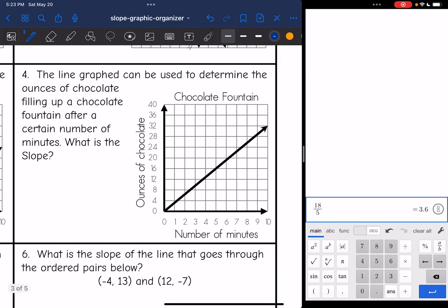The next one says the line graph can be used to determine the ounces of chocolate filling up a chocolate fountain after a certain number of minutes. What is the slope? So I'm going to look at my y-axis. I noticed that it's counting by fours this time. So I'm going to have to be careful when I'm doing the rise again. So I see a perfect point at the origin, and I see another one right here. I'm going to draw my slope triangle.